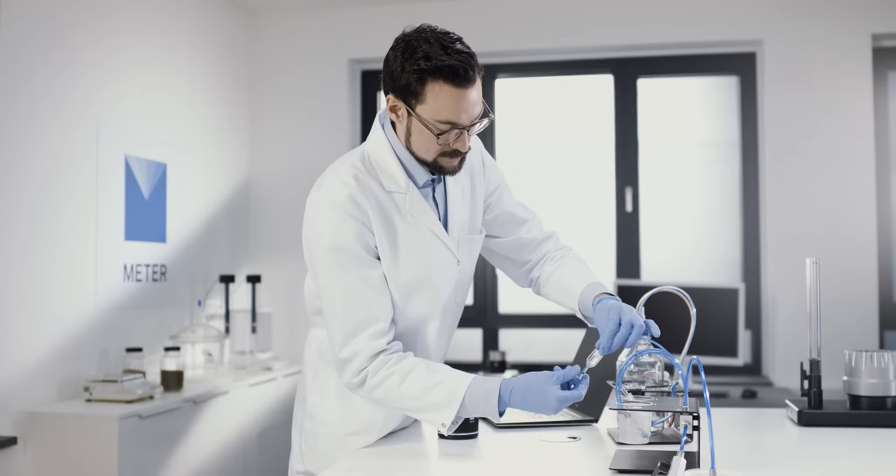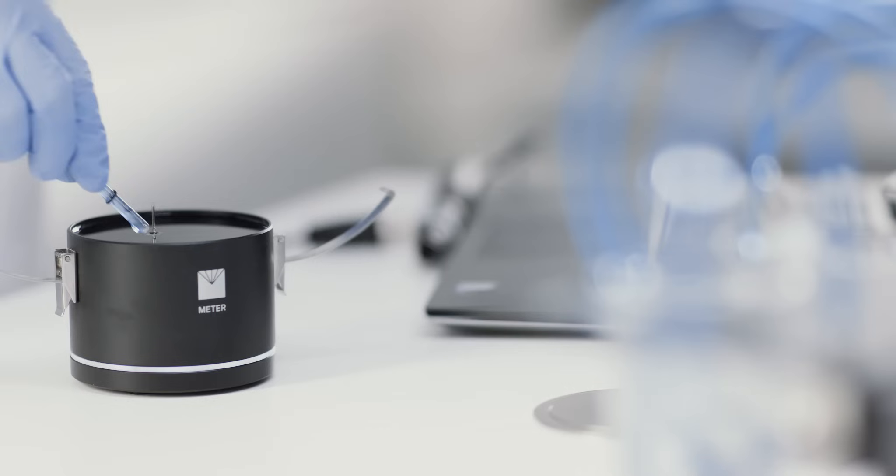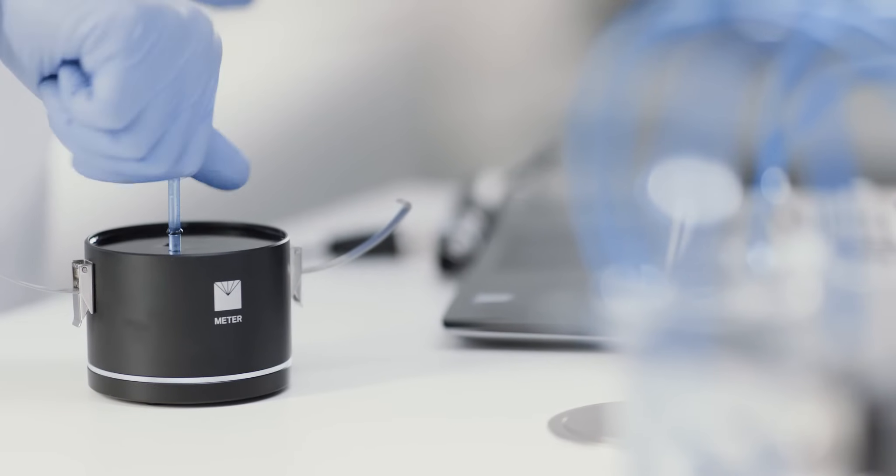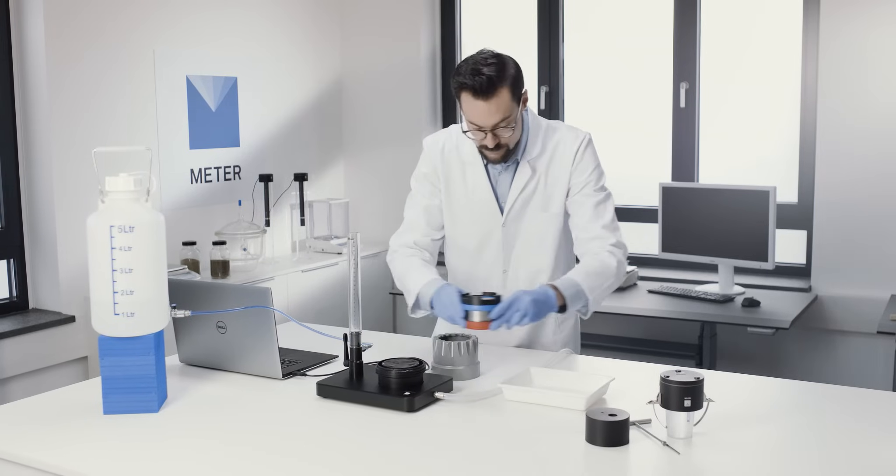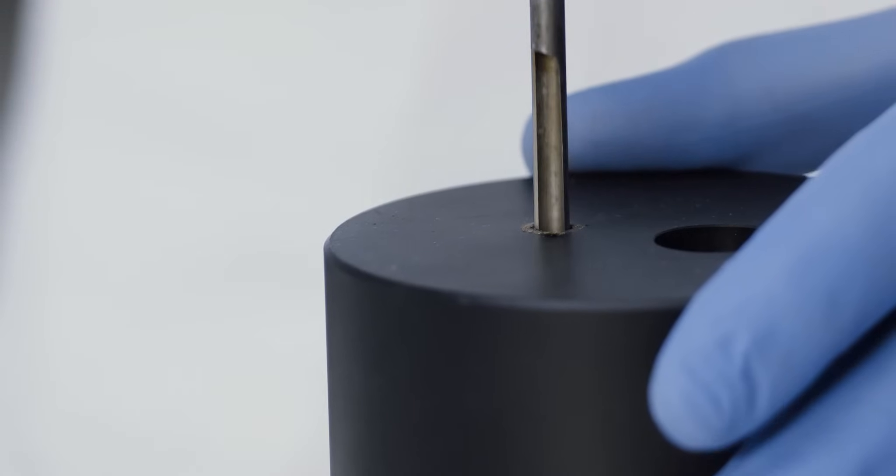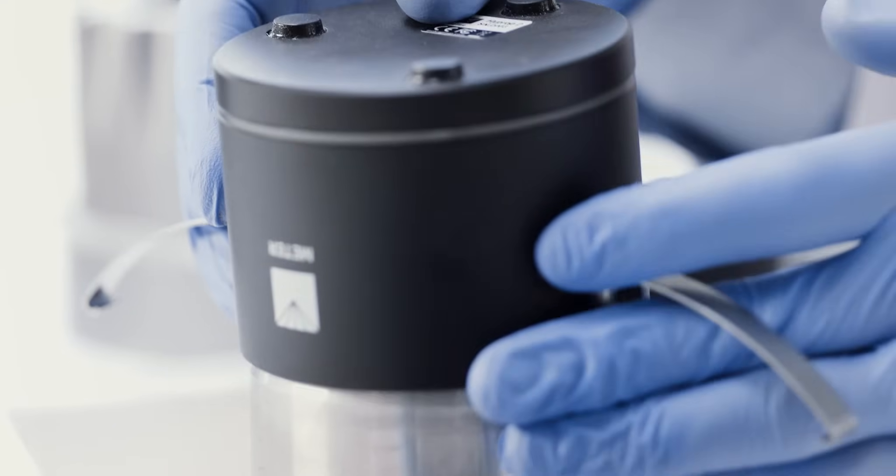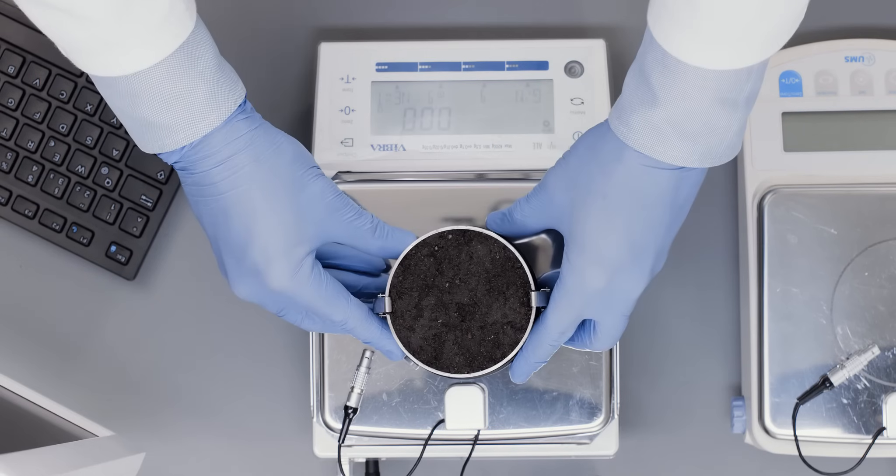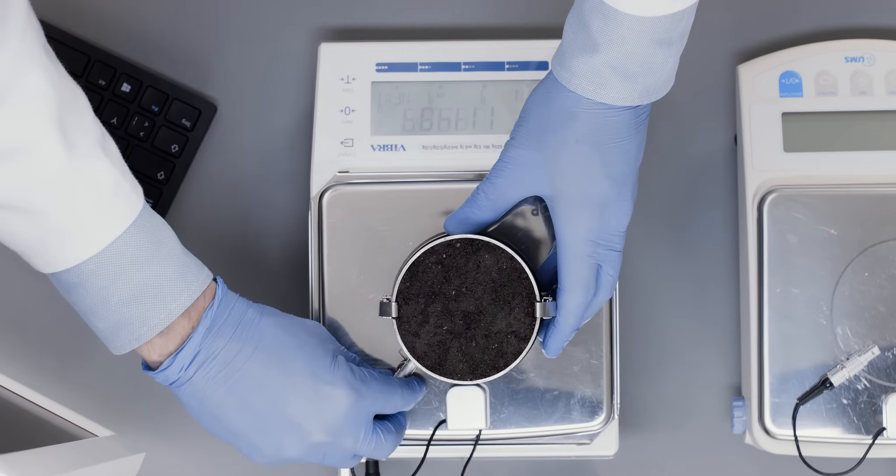Prepare the HYPROP, fill it and connect the tensiometer shafts. Take the sample from the KSAT, auger the holes, and clamp on the HYPROP base. Put it on the scale and connect the HYPROP.